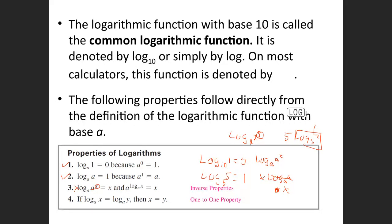Another property: if log base a of x equals log base a of y, then x equals y. So if you have two logarithms equal to each other with the same bases, you can just cross them off and you end up with x equals y. Those are two other properties we can use.